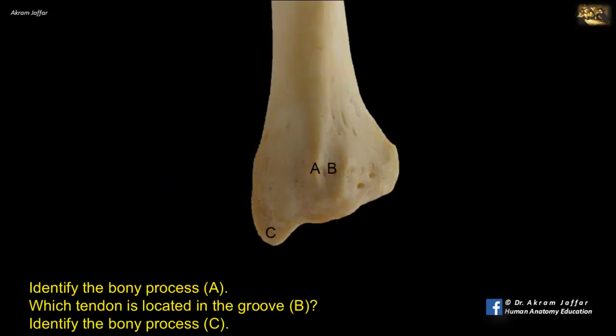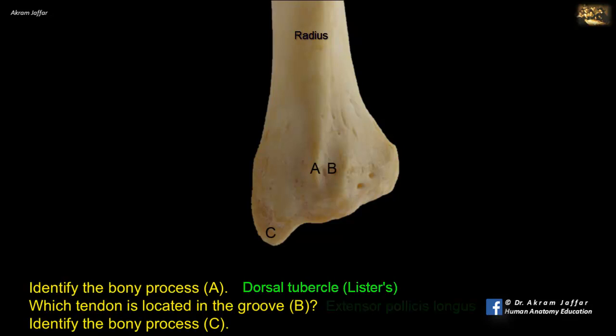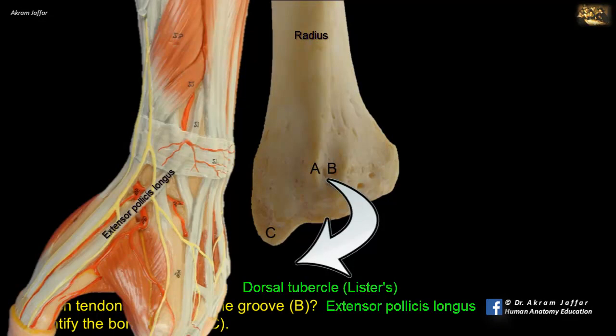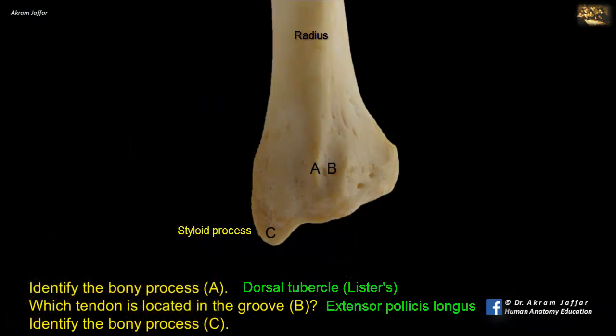Identify bony process A, which tendon is located in groove B, and identify bony process C. This is the dorsal surface of the distal end of the radius. The prominent tubercle A is the dorsal tubercle of Lister. Groove B, medial to it, is for the tendon of extensor pollicis longus, where the tubercle serves as a pulley to change the direction of pull of the tendon. C is the styloid process of the radius, located at the most distal end of its lateral border, and it can be palpated lateral to the wrist. The tubercle A can also be felt dorsal to the distal end of the radius.